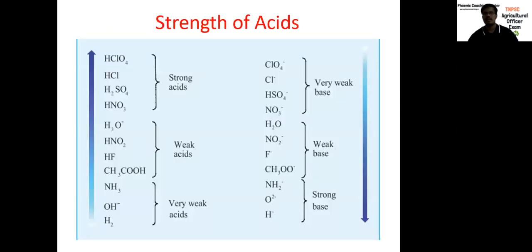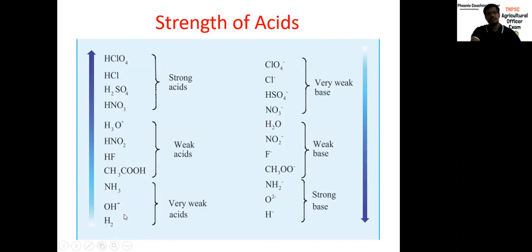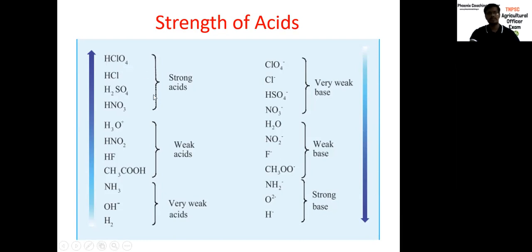Strength of acids: this topic has a lot of questions in TNPC. From bottom to top on the strength scale: water and ammonia are very weak acids. Then acetic acid and hydrofluoric acid (HF), HNO2 (nitrous acid), and H3O+ (hydronium ion) are moderate or weak acids. Strong acids are HNO3, H2SO4, HCl, and HClO4 (perchloric acid). These are all strong acids.